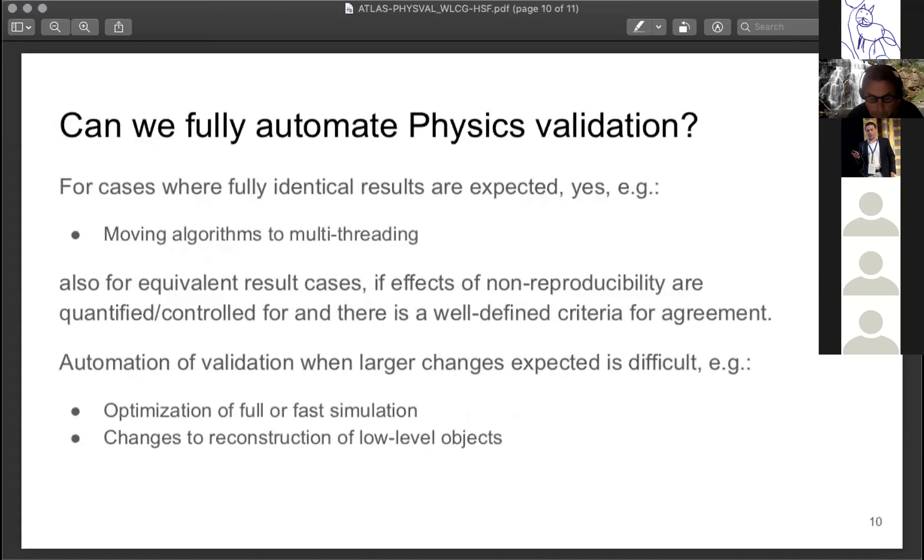We're often asked about how we can fully automate physics validation. If fully identical results are expected, this is clearer and I think this is possible. For example, when moving to multi-threading, we are getting large-scale validation and we do expect identical results. If we can control for the other variations, I think what we have at the moment would be relatively easy to adapt to a fully automated process. That is probably also true for what we've called equivalent result cases where the output may not be exactly identical. The difficulty here would be to basically define or to have a well-defined criteria for agreement as well as the quantification of these effects of non-reproducibility.